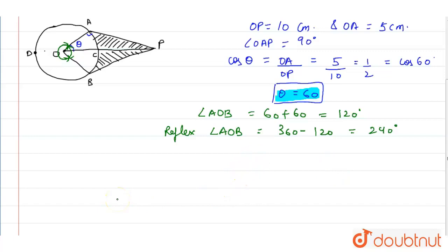Now length of belt in contact with the pulley, which is ADB. So the length of major arc will be: